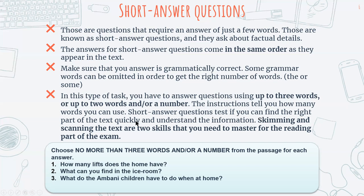Short answer questions test whether you can find the right part of the text quickly and understand the information. Skimming and scanning are two skills you need to master for the reading exam. The question looks like this at the exam: 'Choose no more than three words and/or a number from the passage for each answer.' Sample questions include: How many lifts does the home have? What can you find in the ice room? What do the Ambani children have to do when at home? You cannot write complete sentences.